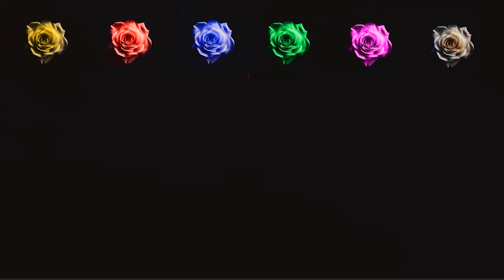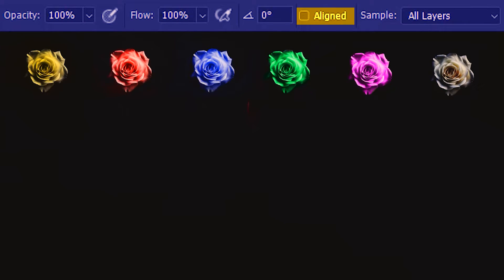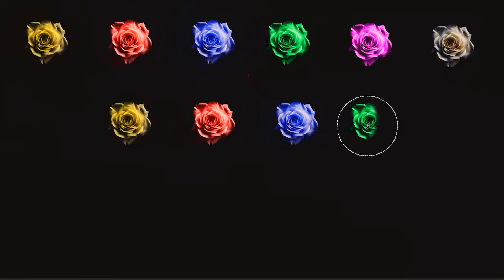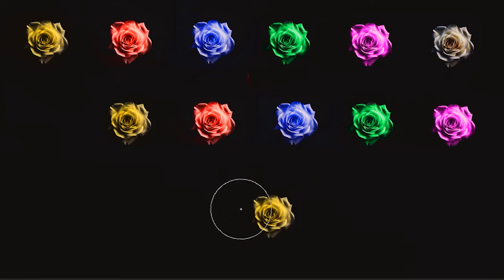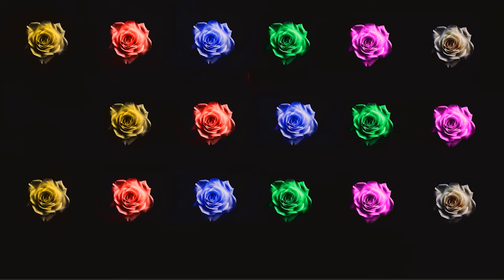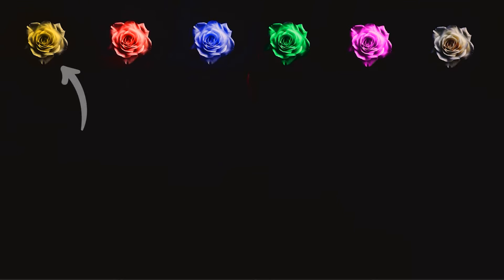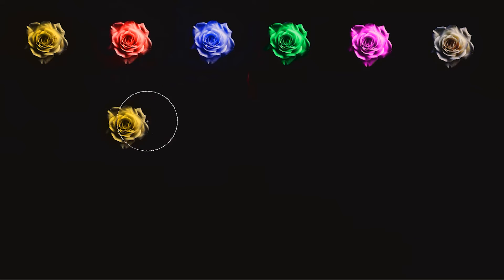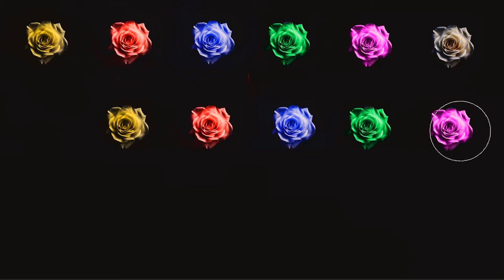Next we're going to look at source coordinates and offset coordinates, but before that I need to explain Aligned. First, we are not going to use Aligned — I'm going to sample the first flower and then paint all the flowers down here. No matter where I want to paint, I'll always get the preview of the first flower. Let's paint from here. Now we're going to check Aligned — sample this flower like before, and as I gradually move the clone stamp from the source, Photoshop is going to calculate the x and y coordinates. I'll complete the drawing and stop here.